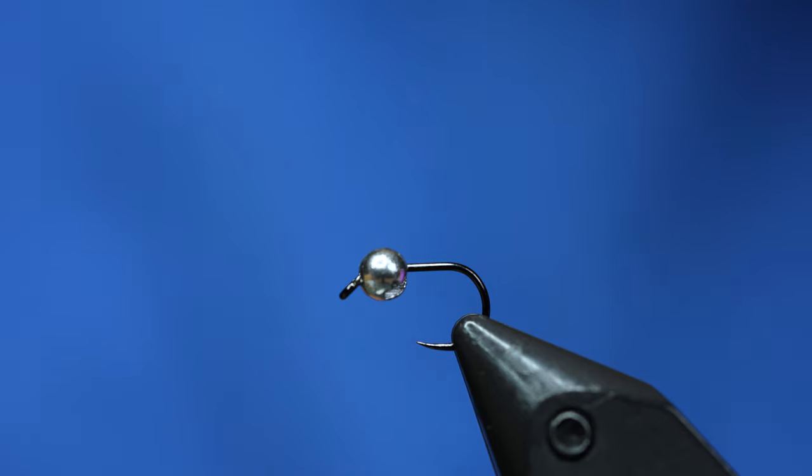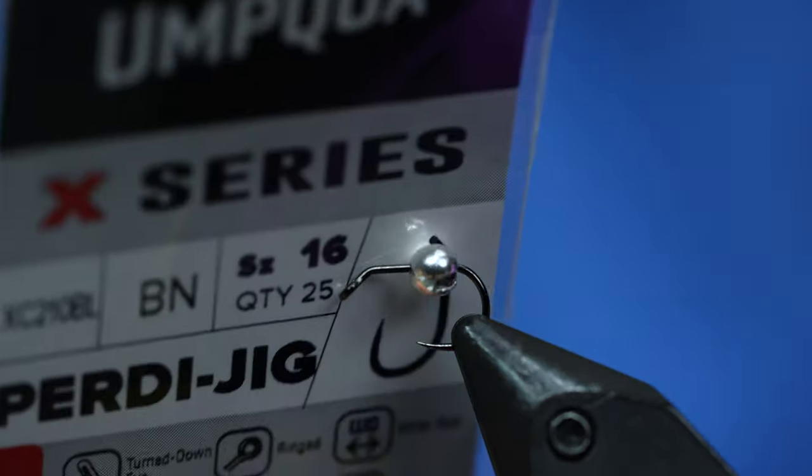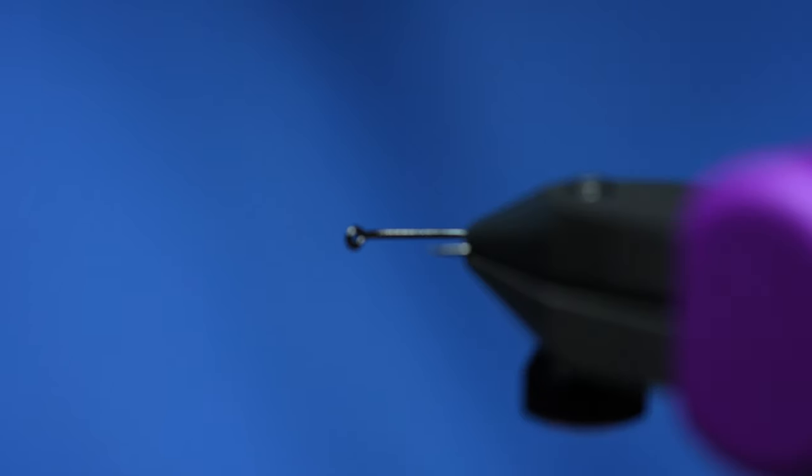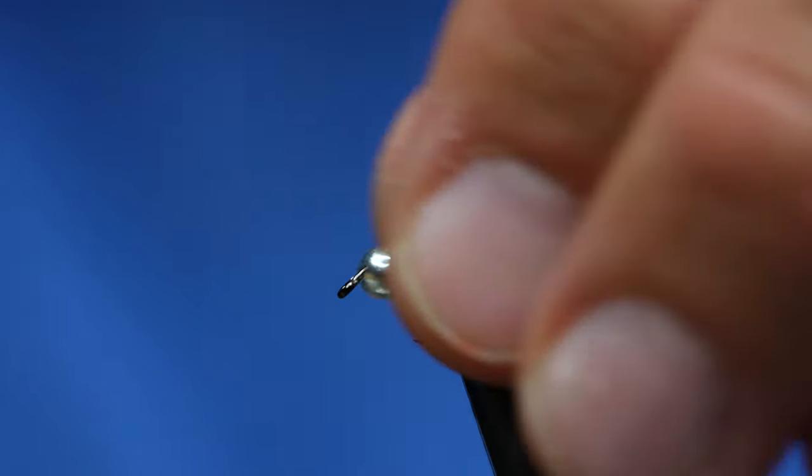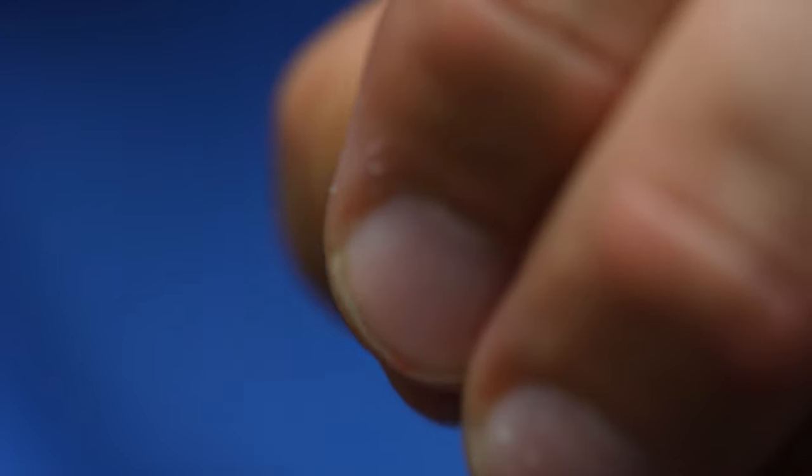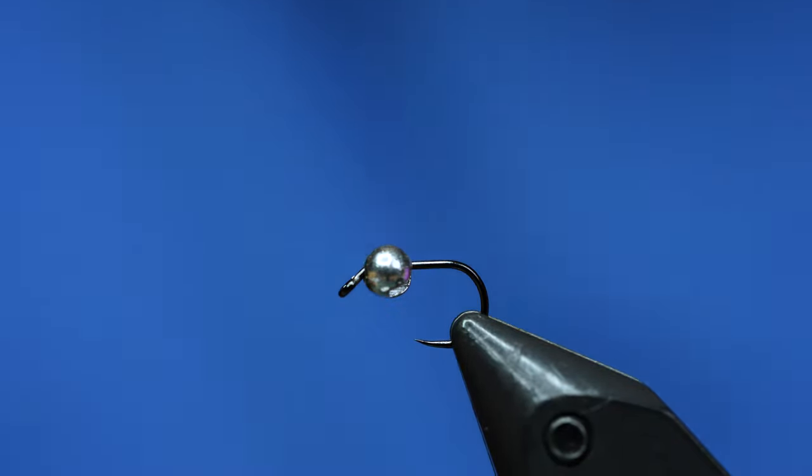I've chosen a size 16 and this is the Perdigon Jig hook from Umpqua. What I like about this is you can see the eye is turned. And the importance of the eye being turned is I can put a giant bead like this three and a half mil or even a four on this 16 and it's not going to slide off the front of it.